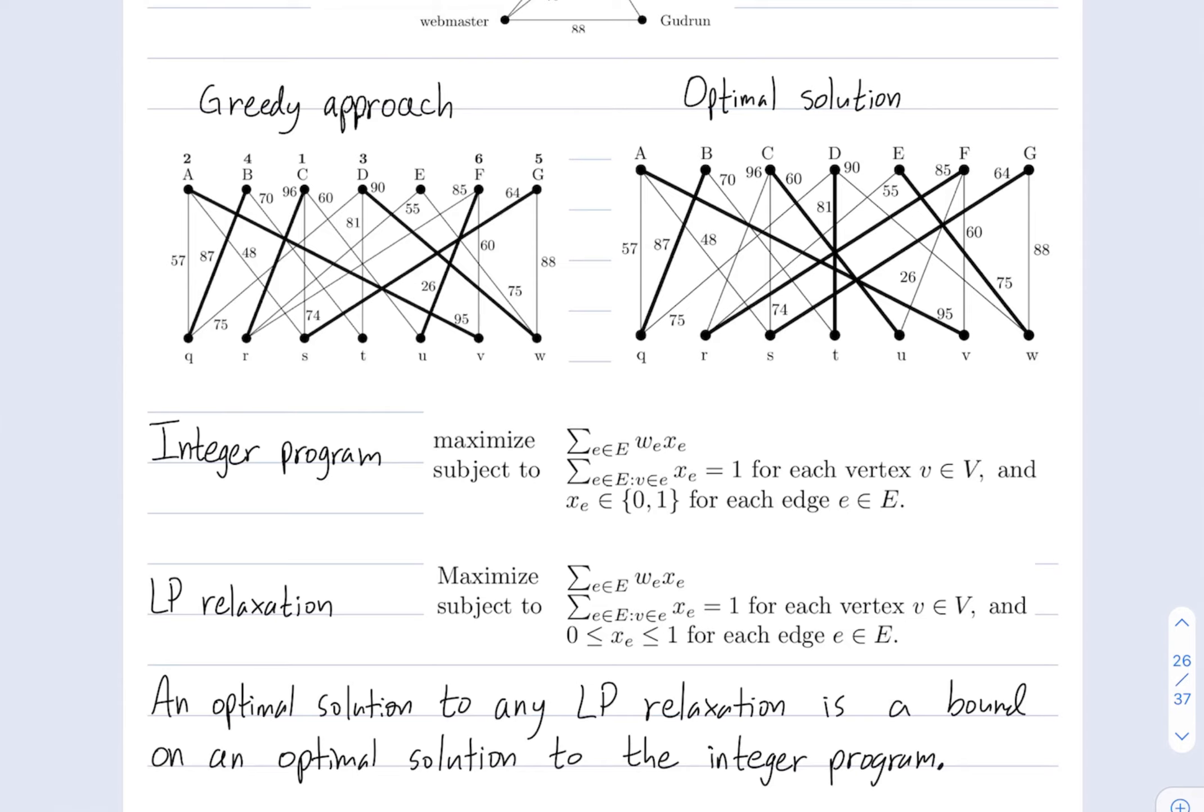So, in this LP relaxation, you could have things like person b might fulfill role q 60% of the time, and they might fulfill role t 40% of the time. Because then these two variables would be 0.6 and 0.4, and they sum up to 1.